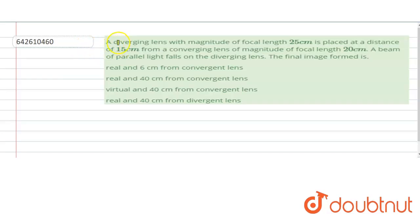Hello, problem statement: A diverging lens with magnitude of focal length 25 cm is placed at a distance of 15 cm from a converging lens of magnitude of focal length 20 cm. Now a beam of parallel light falls on the diverging lens. We have to find where the final image will be formed. So let's understand the situation.